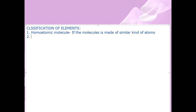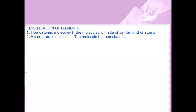The second type is heteroatomic molecules. Heteroatomic molecules are molecules that consist of atoms of different elements. That is called heteroatomic molecules.